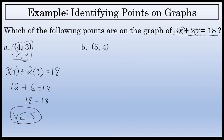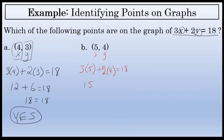Let's try another. Is the point (5, 4) on the graph of 3x plus 2y equals 18? Again, we'll substitute the first value 5 for x and the second value 4 for y, resulting in 3 times 5 plus 2 times 4. We're testing to see if that's 18. 3 times 5 is 15, and 2 times 4 is 8. 15 plus 8 is 23, which is not a true statement. So no, the point (5, 4) is not on the graph of 3x plus 2y equals 18.